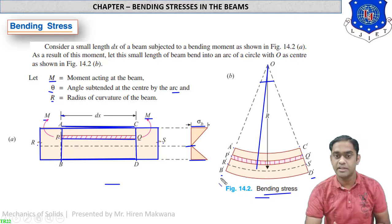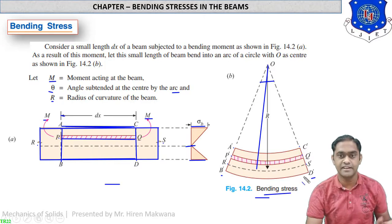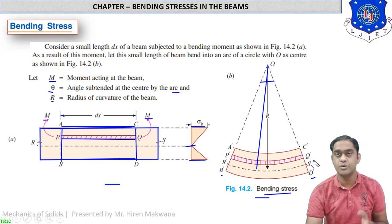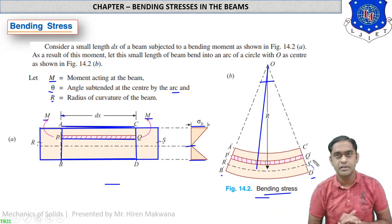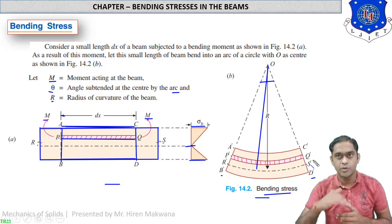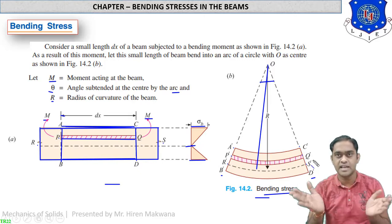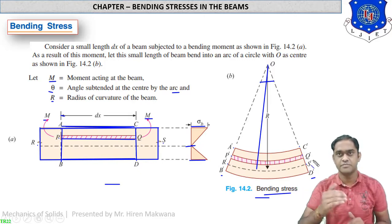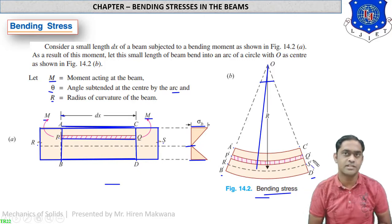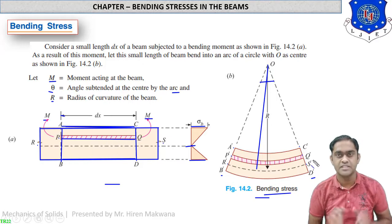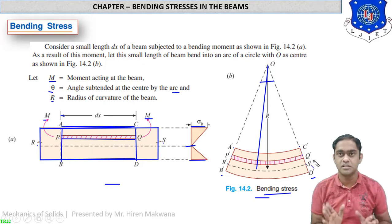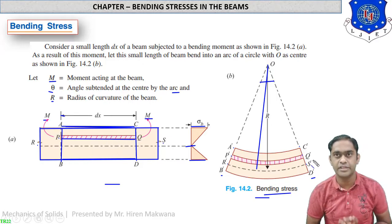You can imagine that B'D' will increase in length, while the upper layers A'C' and P'Q' are decreasing. In other words, layers above the neutral axis are contracting, while the layers below the neutral axis are expanding. This is the general phenomenon in the bending of beams.